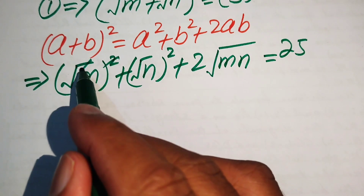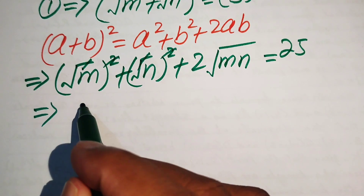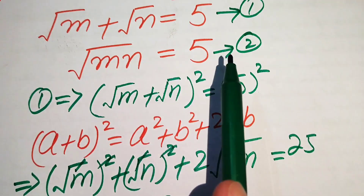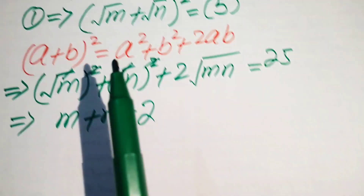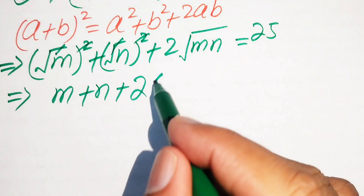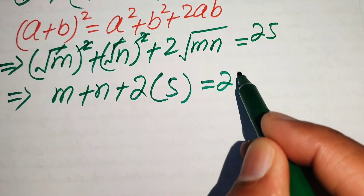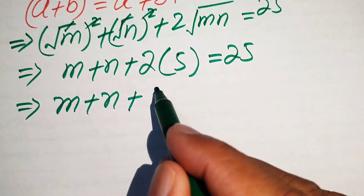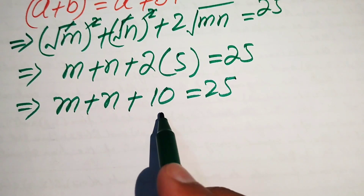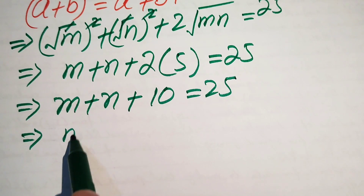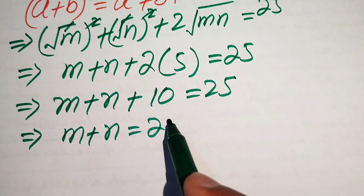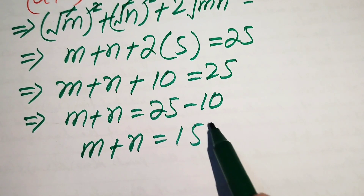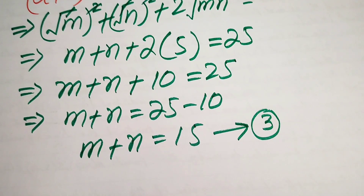The square roots cancel and we get m + n + 2√(mn) = 25. From equation 2, √(mn) = 5, so we substitute: m + n + 2·5 = 25, giving m + n + 10 = 25. Moving 10 to the right-hand side: m + n = 15. We call this equation number 3.